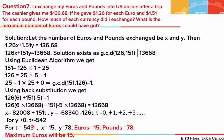Both x and y have to be positive. For t less than −542, we will get the answer. Taking t = −543, we get x = 15 and y = 78. So the number of Euros exchanged was 15 and the Pounds exchanged were 78. The maximum number of Euros is 15, because if we take a value smaller than −543, the number of Euros and Pounds start becoming negative.